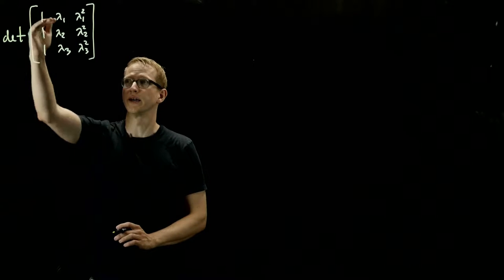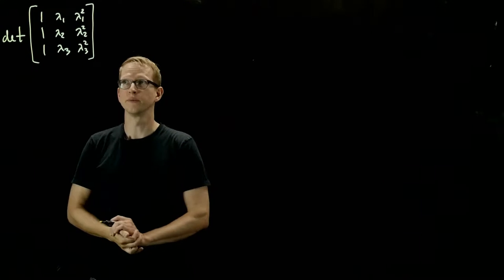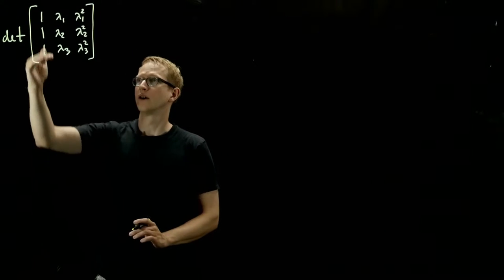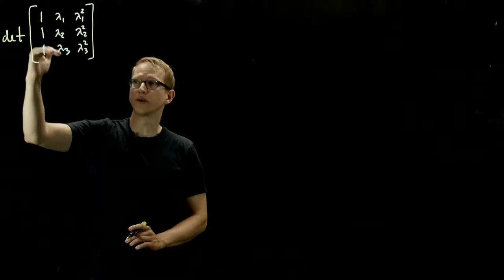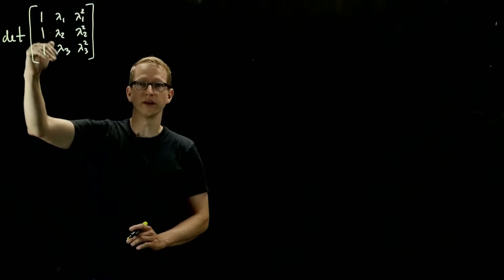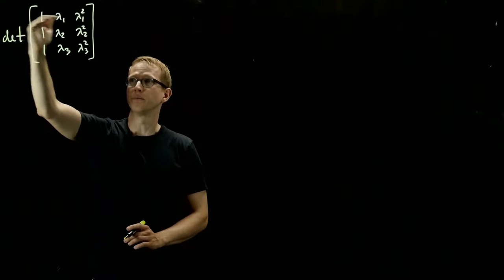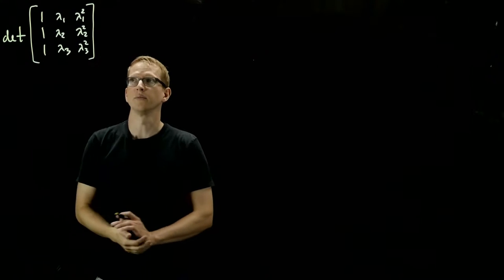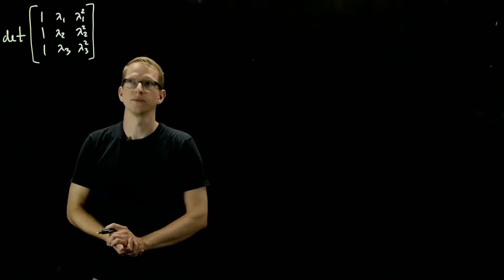So we're going to do this by essentially row reduction. For the first step, we're going to get rid of the ones underneath the top left one by subtracting the first row from those.